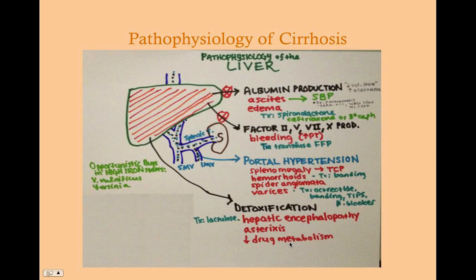Regarding detoxification, there are two things that get detoxified: nitrogenous wastes, which move out of the body as urea, and drugs. As far as drug metabolism, we want to avoid using drugs that are metabolized in the liver. As for nitrogenous waste, buildup can cause hepatic encephalopathy — an increase in ammonia, which is directly toxic to the brain. Asterixis, the hand flapping, is a classic symptom of increased ammonia. This is treated with lactulose, which blocks the absorption of ammonia in the GI tract.